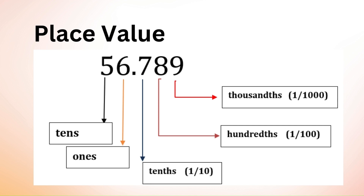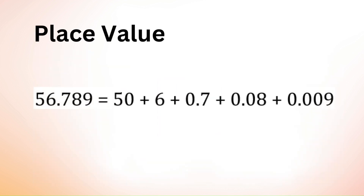After the decimal point: 7 is in the tenths place, so it represents 0.7. 8 is in the hundredths place, so it represents 0.08. 9 is in the thousandths place, so it represents 0.009. So 56.789 can be broken down as 50 + 6 + 0.7 + 0.08 + 0.009.